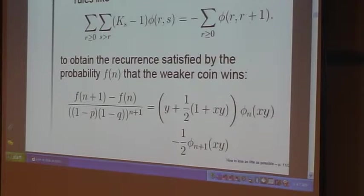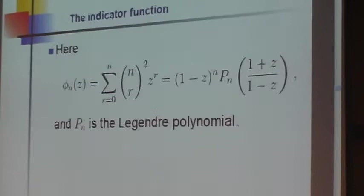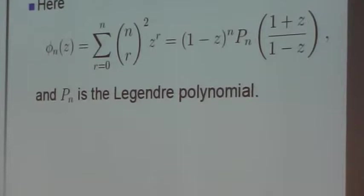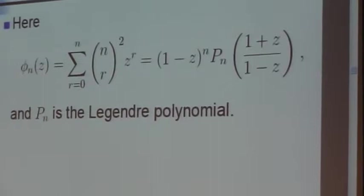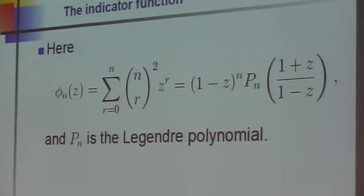phi_n(z) is the polynomial of degree n whose coefficients are the squares of the binomial coefficients. And that's the polynomial which is, in fact, the Legendre polynomial evaluated at (1+z)/(1-z) and multiplied by (1-z)^n.